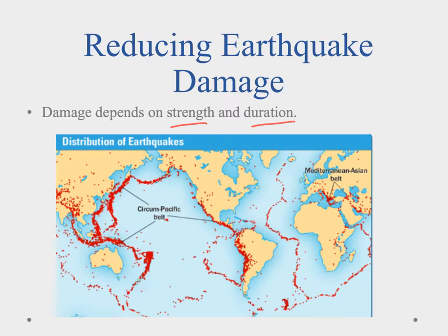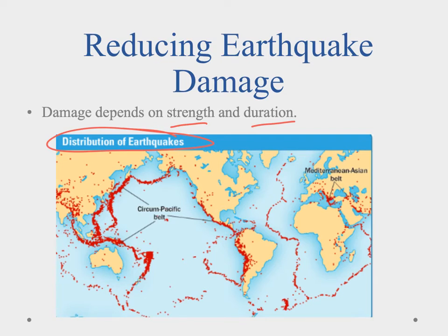We can take steps to reduce that damage. If we look at where earthquakes happen, we try to avoid putting large cities and structures on the faults. We can also use building materials and design structures to withstand the shaking. And we can teach populations how to react when an earthquake occurs. The combination of all these preparatory steps will allow us to reduce that damage.